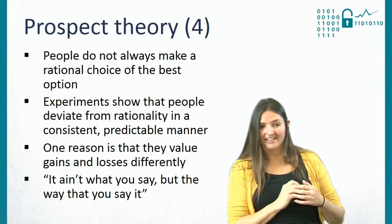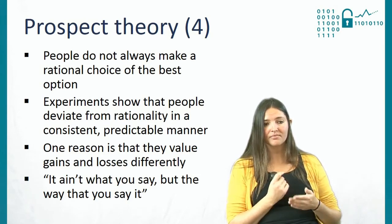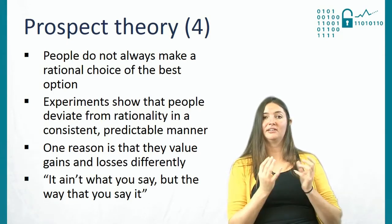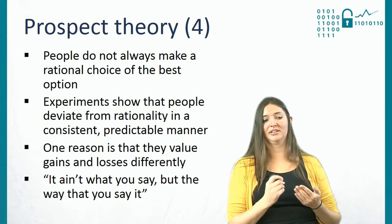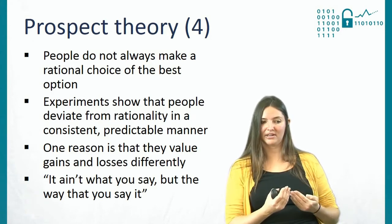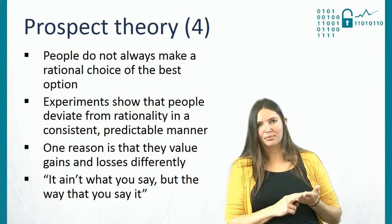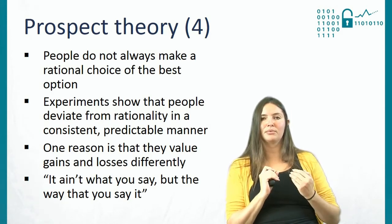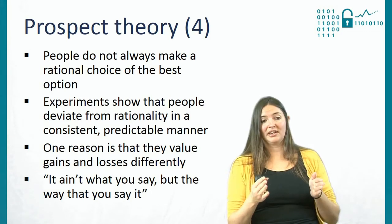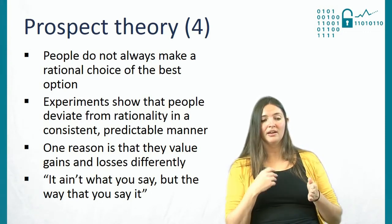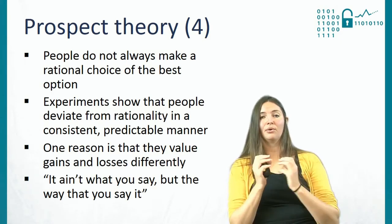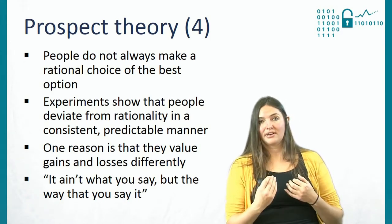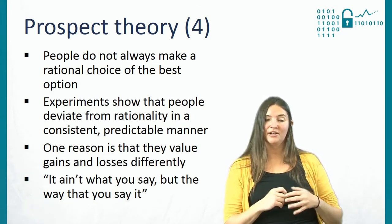So what have we learned about prospect theory? First, people do not always make rational decisions and don't always choose the best option on paper. Experiments consistently show that people deviate from rationality in a predictable manner — one reason being that people value gains and losses differently and therefore behave differently. The Asian flu example shows that it really matters how you frame things. In all four programs, 200 people were going to live and 400 were going to die — the absolute outcome never changed. But framing it as a gain or a loss situation changes people's preferences and behavior. It ain't what you say, but the way you say it.